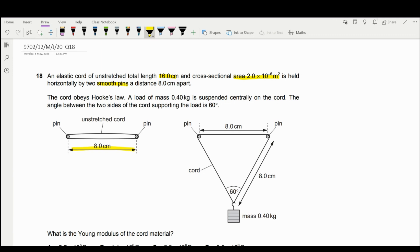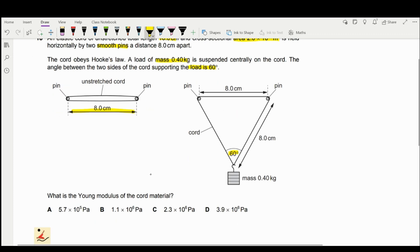So the cord obeys Hooke's Law. You have a mass of 0.4 kg suspended at the center, and there are some extensions. So there is a 60 degree angle, as shown in your figures here. So what is the Young modulus of your material? You are going to calculate the Young modulus.